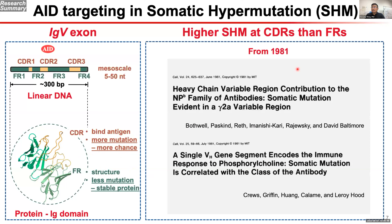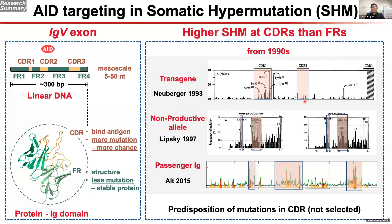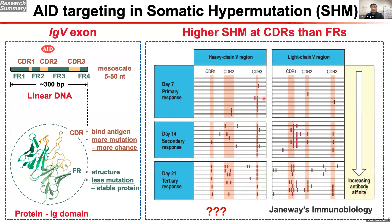Going back to 1981, David Baltimore's lab and Hood's lab both discovered that at the DNA sequence level, mutations preferentially happen in the CDR region compared to the framework. This is in even in immunology textbooks — more mutations in CDR, fewer in framework. However, the molecular mechanism is still unclear.